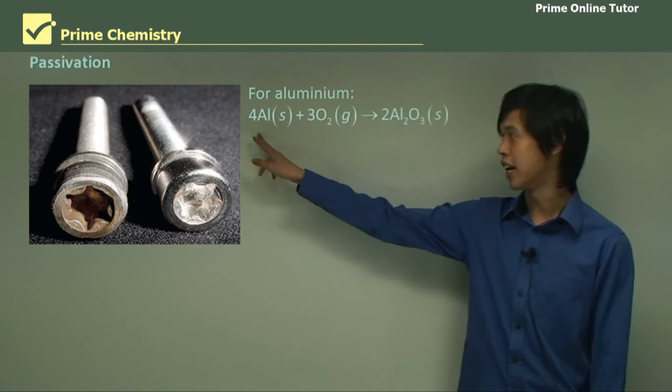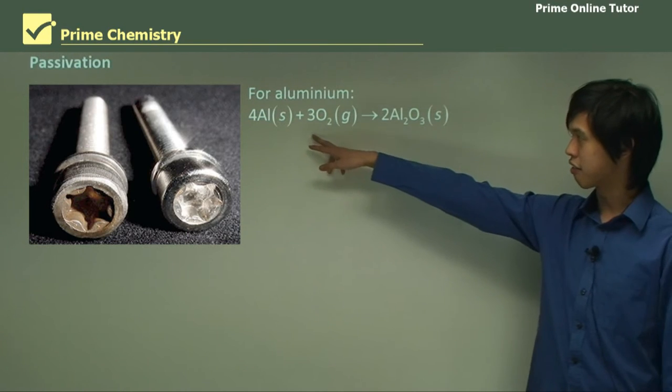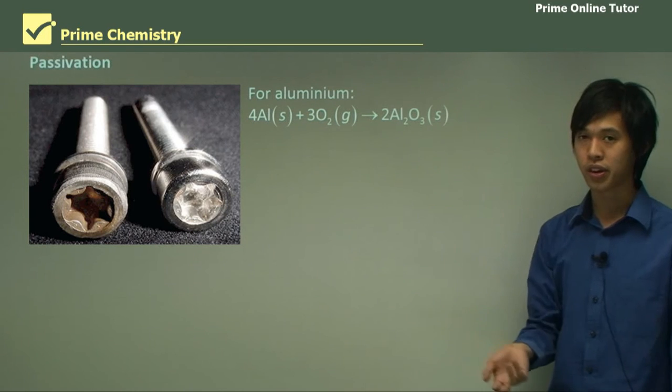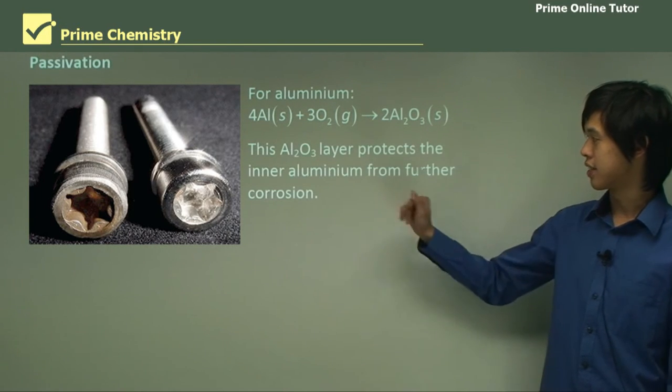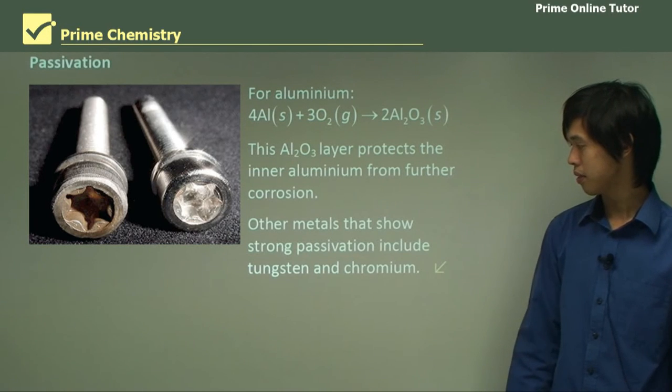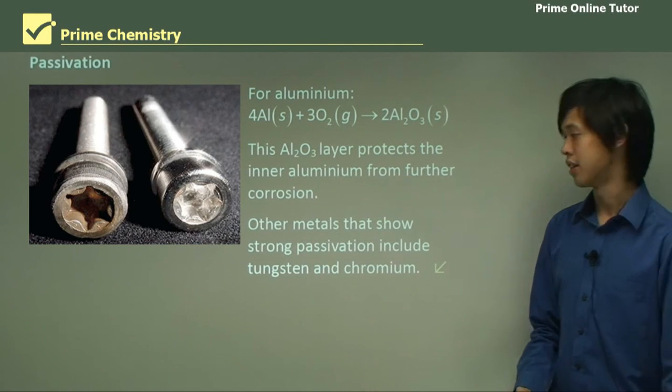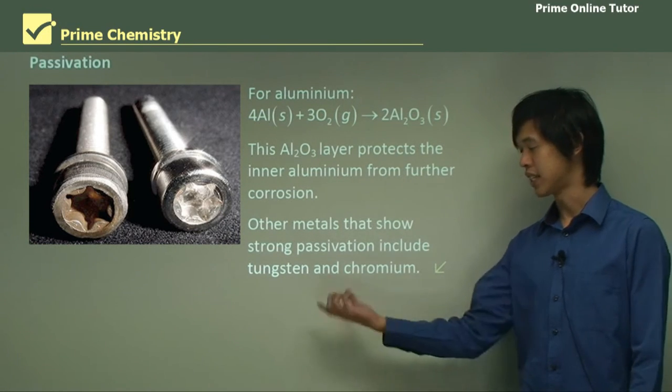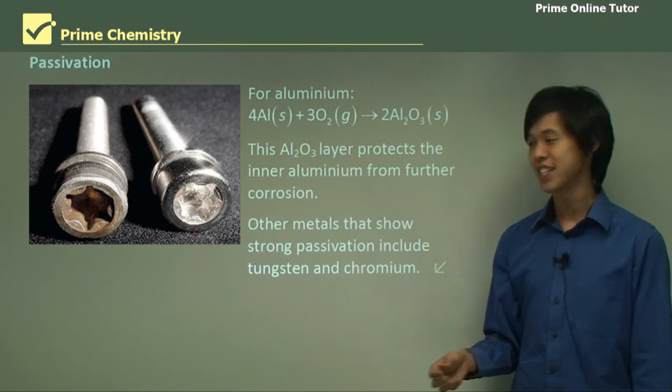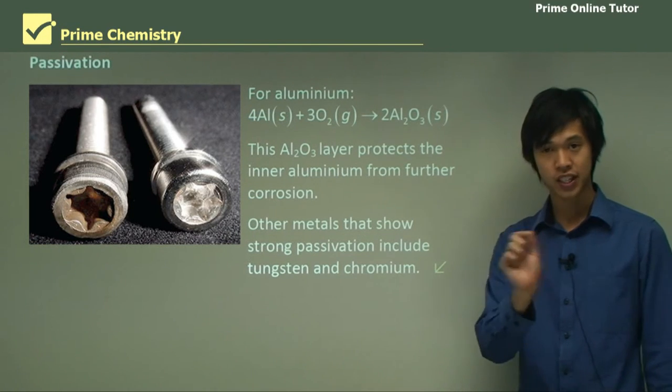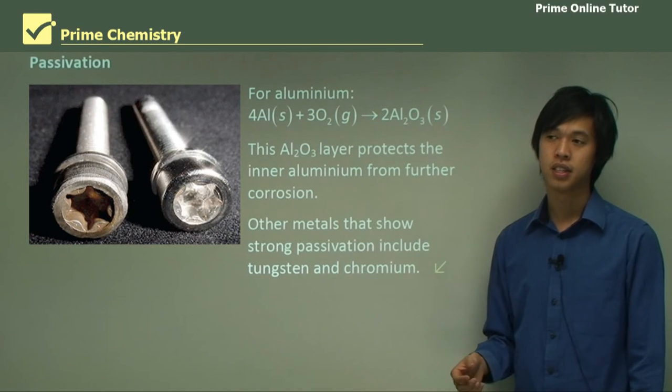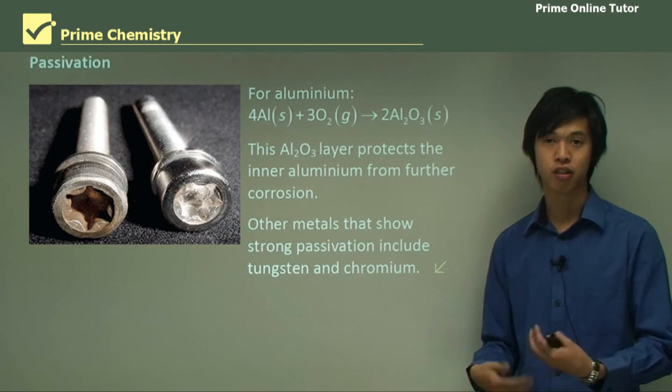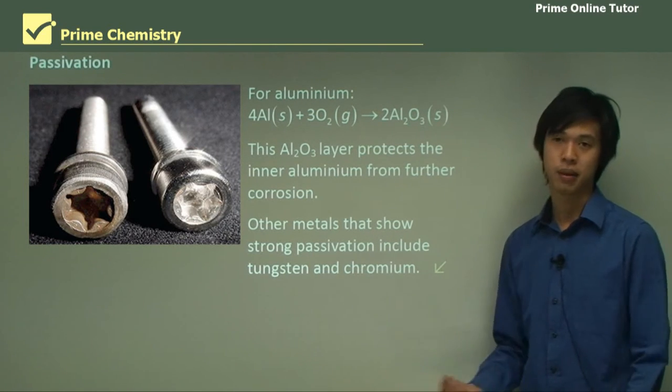For aluminium, you've got four aluminium atoms plus three oxygen molecules, gives you 2Al2O3, which is aluminium oxide. This protects the inner layer from corrosion. Other metals that do this are tungsten—remember those old-style light bulbs that got really hot, tungsten was the little really hot part, and that forms a passivation layer. And chromium, which is the element that helps to make chrome and chrome steel and stainless steel, also forms a passivation layer as well.